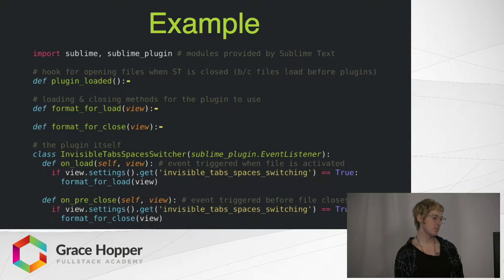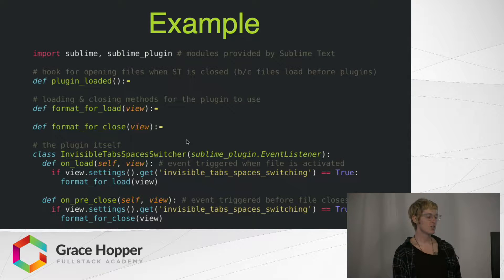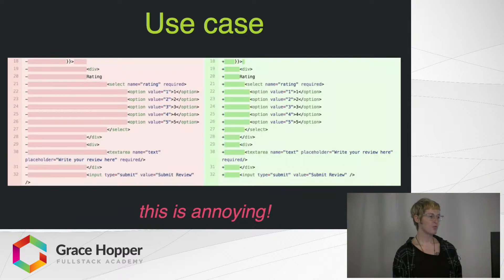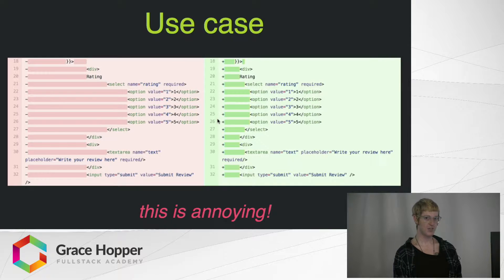As I walk through this process, I'm just going to be using this plug-in as an example, which I wrote. What it does is whenever you open a file, it'll convert all of your indentation to either tabs or spaces — to whatever you like. And then right before you close the file, it'll convert it back. This is an issue that kept coming up in our Grace Chopper project: these files are exactly the same, but a pull request was flagging them as different just because one has tabs and one has spaces. So that's really annoying.